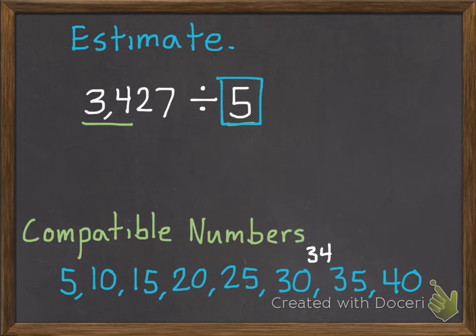And 34 is right here between 30 and 35. We want to find which of those numbers is the closest to 34. So you can go up or down. So it's four numbers away from 30, and only one away from 35. So 35 is the closest number that is compatible. So we're going to change that 34 to 35.